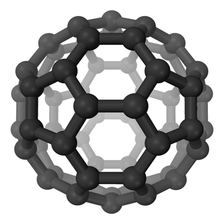Diatomic carbon, systematically named dicarbon and 1λ2, 2λ2 ethene, is a green, gaseous inorganic chemical with the chemical formula C=C, also written C2. It is kinetically unstable at ambient temperature and pressure, being removed through autopolymerization.